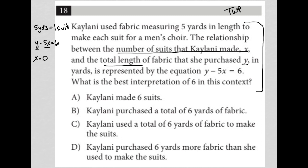If she makes no suits, we'd have y equals five times zero. I'm sorry, y minus five times zero equals six. So of course, that's just y equals six. Well, that means she's buying fabric. She's buying six yards of fabric without making any suits. What does that mean? Let's see.